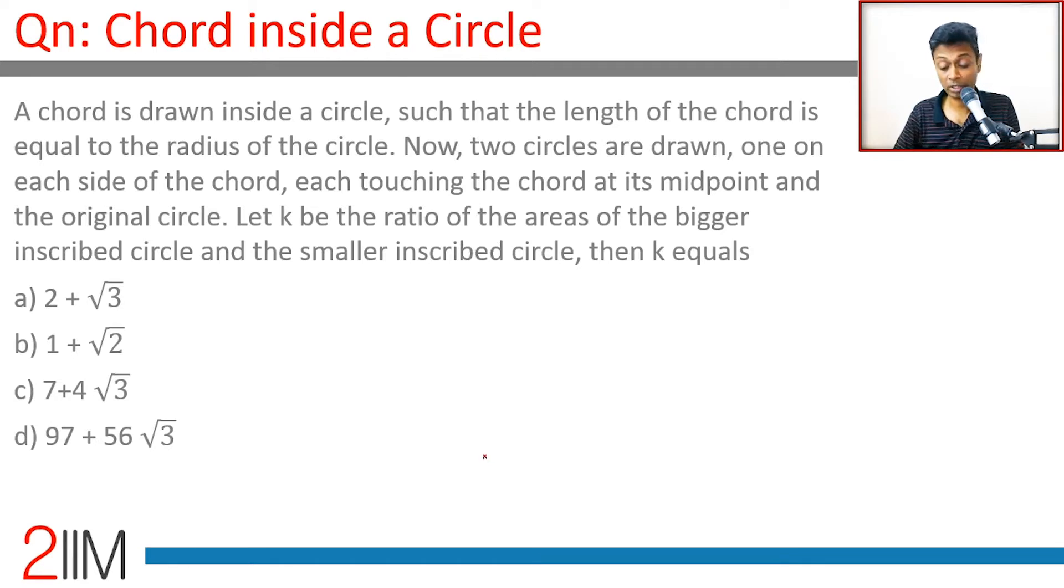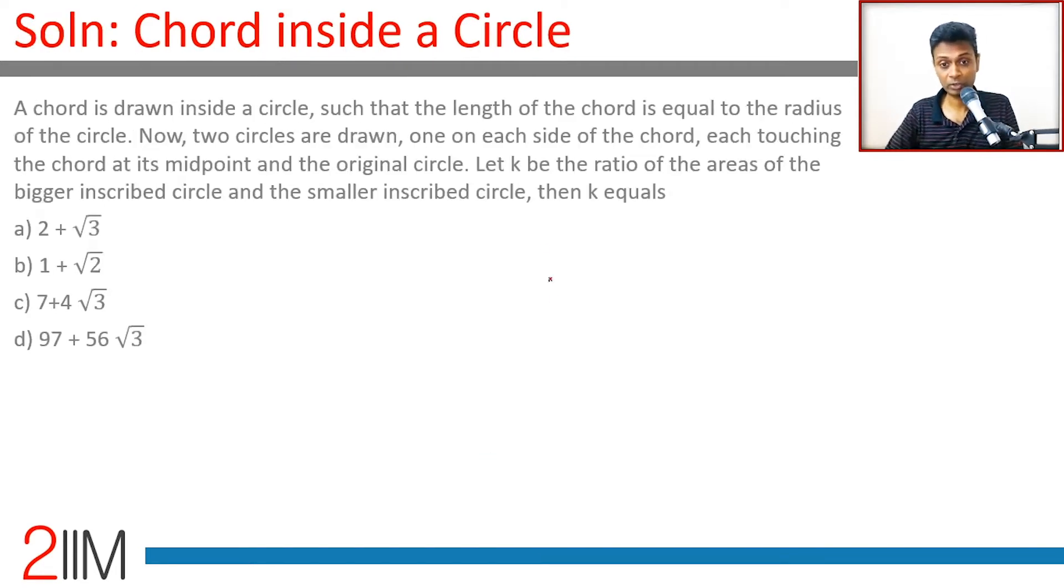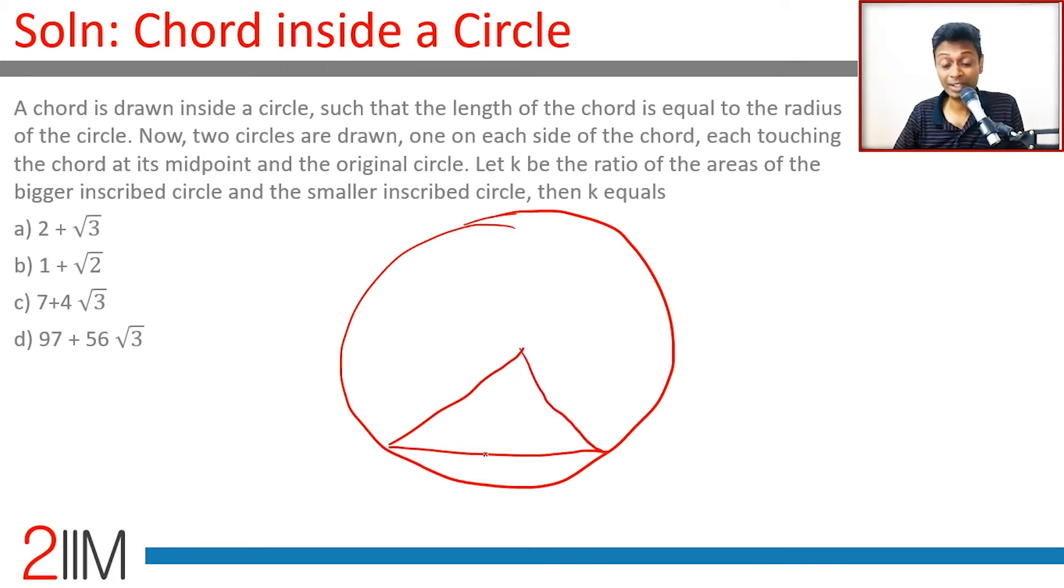Oh my god, very confusing. So let's draw a big circle first with some radius such that the length of the chord is equal to the radius. Draw here. Now if a chord is equal to the radius, then this is an equilateral triangle OAB.